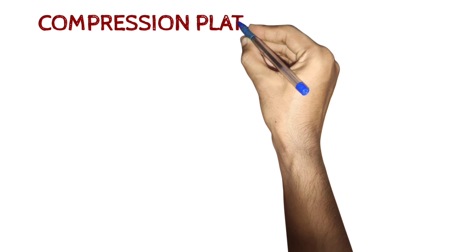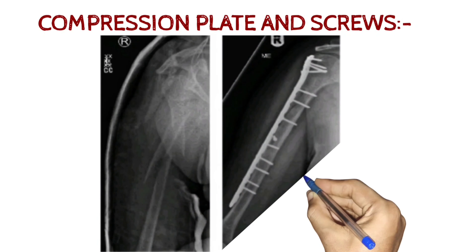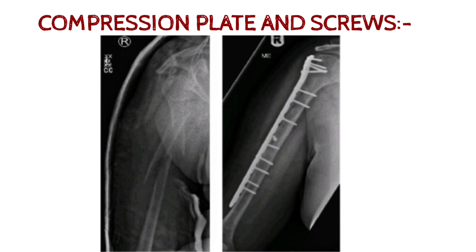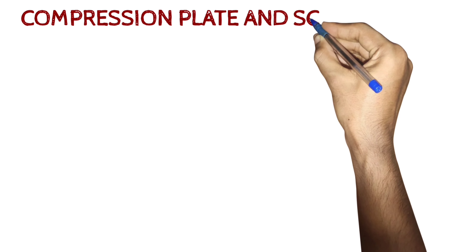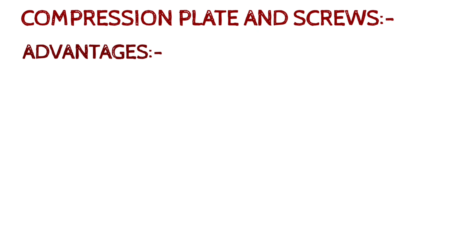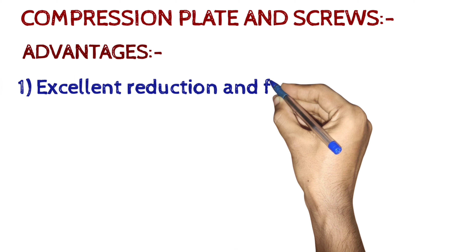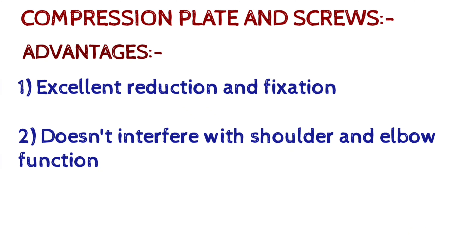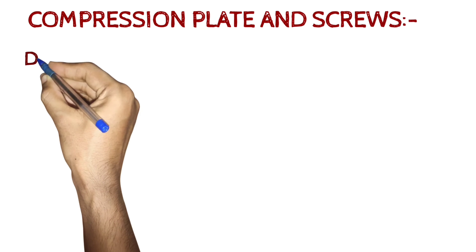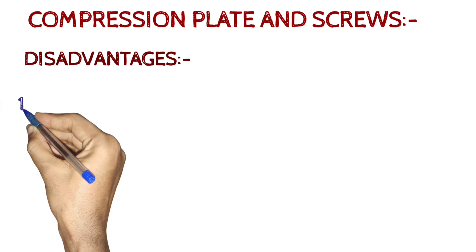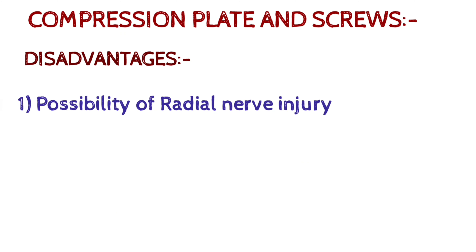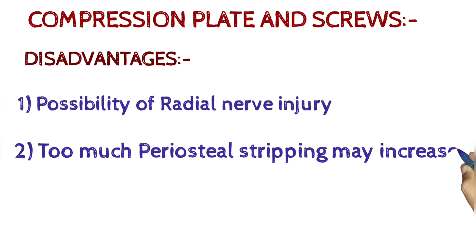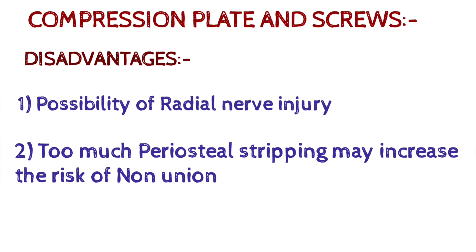Compression plate and screws: Advantages include excellent reduction and fixation, and it does not interfere with shoulder and elbow function. Disadvantages include the possibility of radial nerve injury, and too much periosteal stripping may increase the risk of non-union.